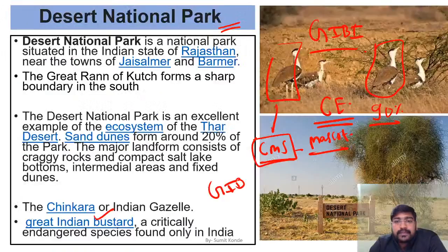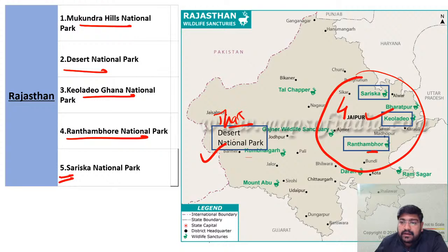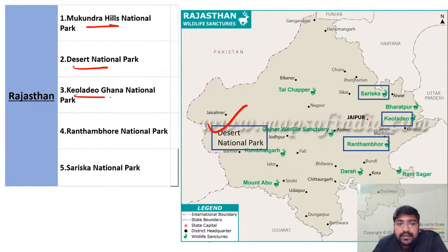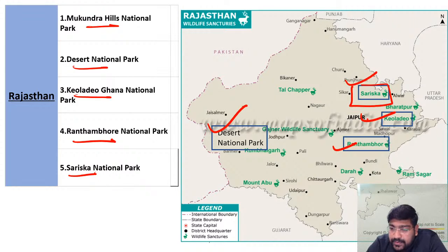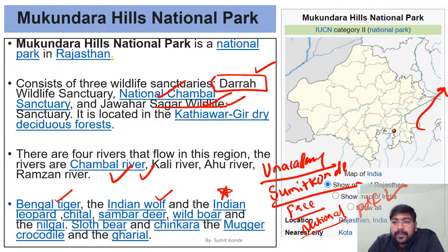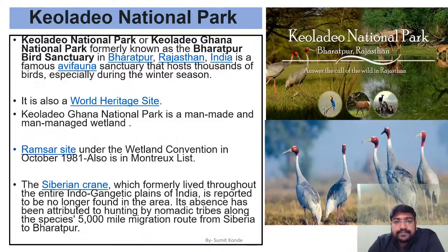To recap Rajasthan's national parks: Mukundra Hills, Desert National Park, Keoladeo Ghana, Ranthambore, and Sariska — with Sariska being near the upper Aravalli. Four parks are in the east and one (Desert NP) is in the west. That covers Rajasthan.